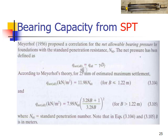Bearing capacity from standard penetration test. Meyerhof proposed correlation for the net allowable bearing pressure for foundation with the standard penetration resistance N60. The net pressure has been defined as Q net is equal to Q allowable minus gamma into D. According to the Meyerhof theory, for 25 mm of estimated maximum settlement, Q net allowable is given by equations with N60. Where N60 is the standard penetration number. Note that equation.